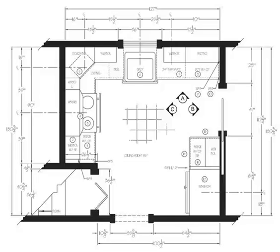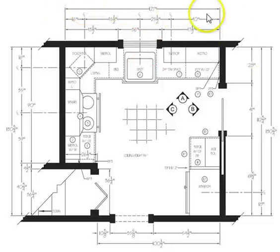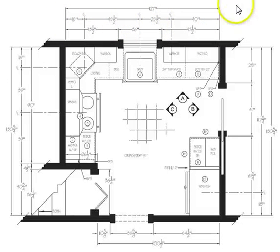We are looking at a sample kitchen floor plan and we're going to take a look at this wall right here. The first thing you'll notice is that there are three dimension strings — one, two, and three. I'll refer to these as the outermost, the innermost, and the middle dimension string.